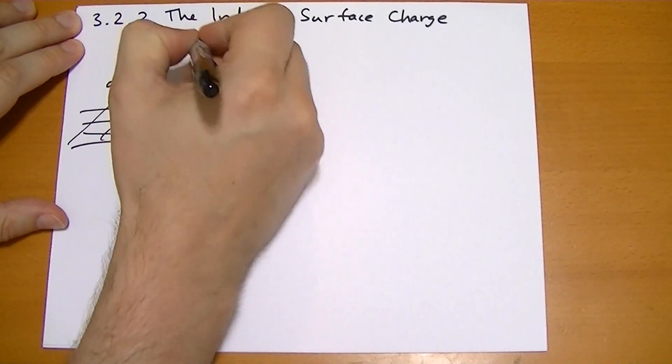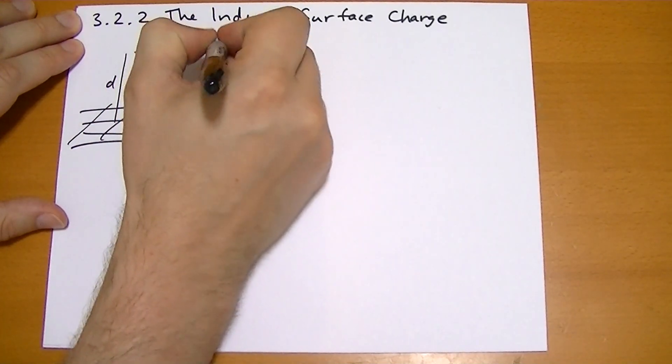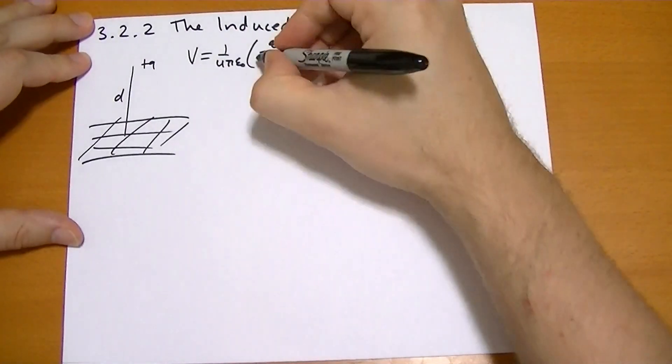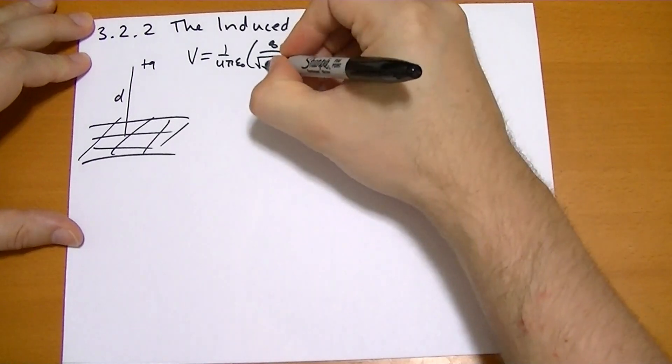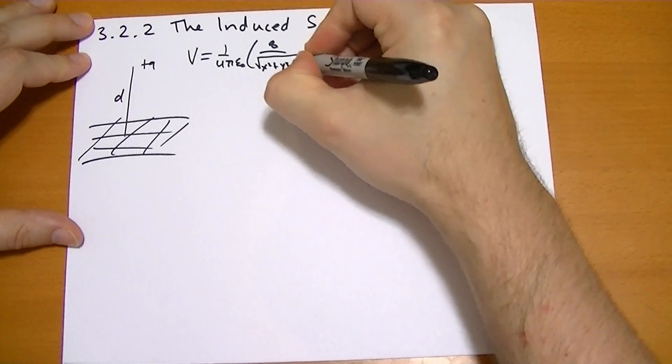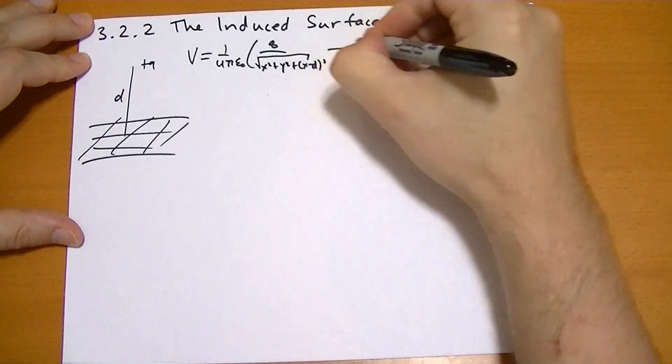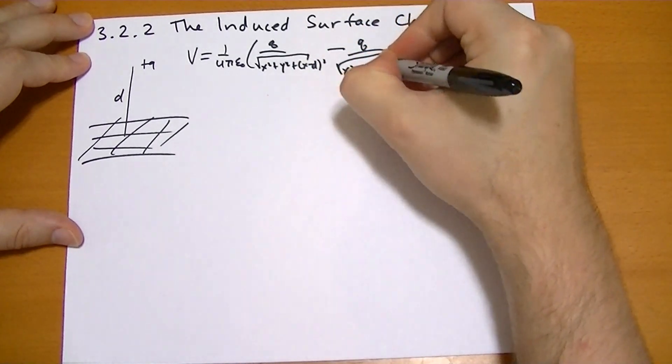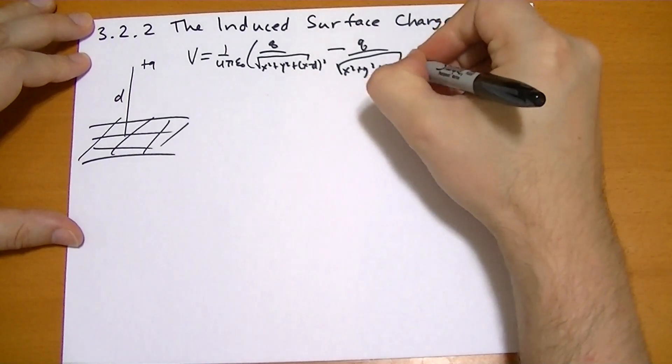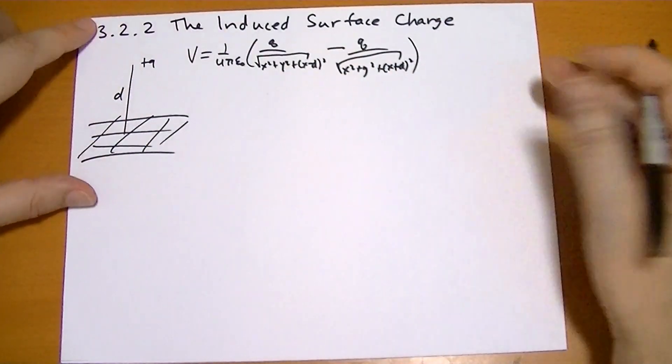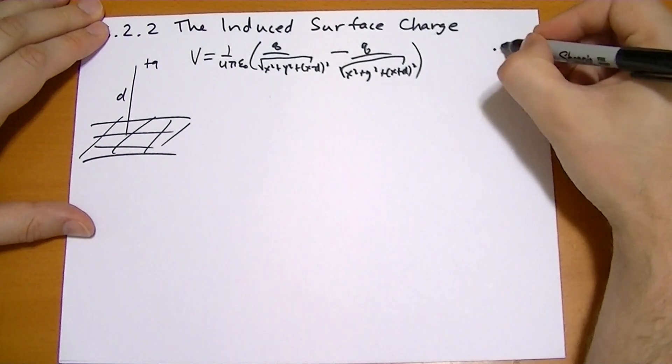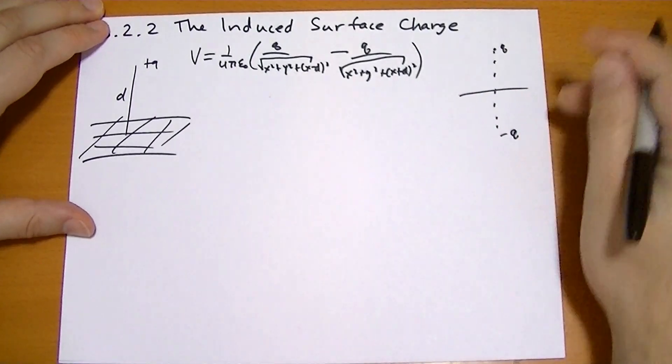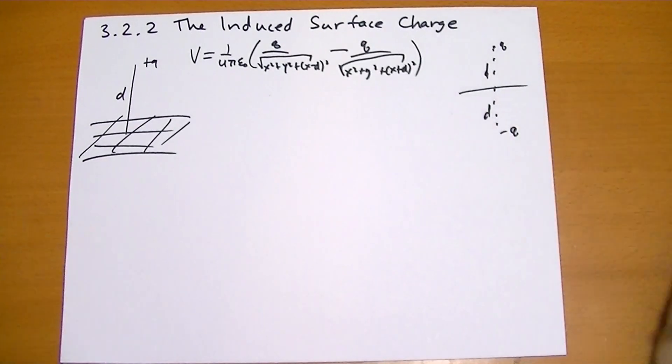The solution is that the potential equals one over four pi epsilon naught q over square root of x squared plus y squared plus z minus d squared minus q over the square root of x squared plus y squared plus z plus d squared, which is the same potential as if we had plus q up here and minus q down there, distance d.